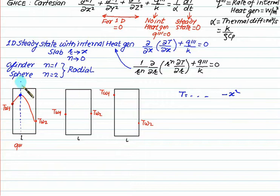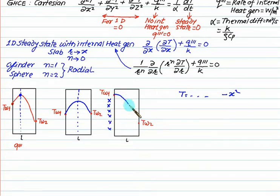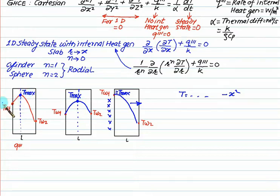If internal heat generation is exactly at the center, the maximum temperature occurs at x = L/2 and the parabola is equally distributed. If the left side of plate 3 is insulated, heat transfers only from TW1 to TW2 — an imaginary half-parabola applies, and TW1 itself equals T_max. At the insulated wall, dT/dx = 0. Using these conditions, the location and value of maximum temperature can be found.